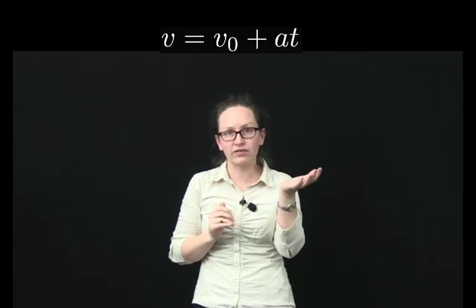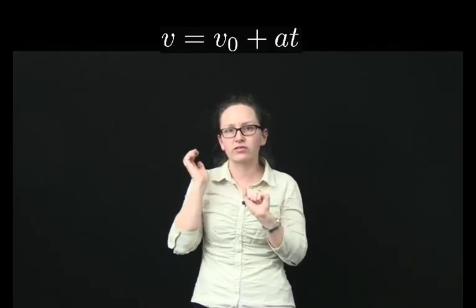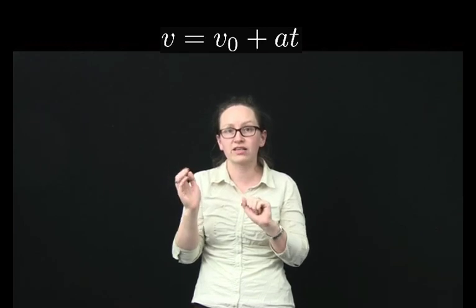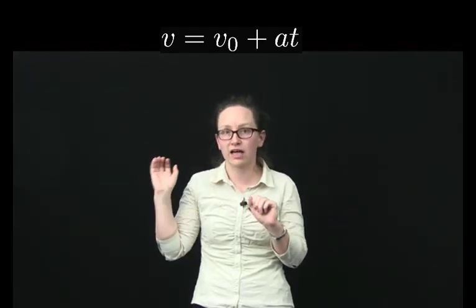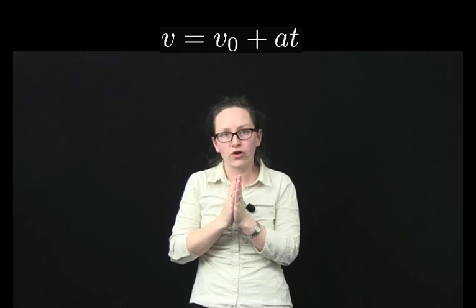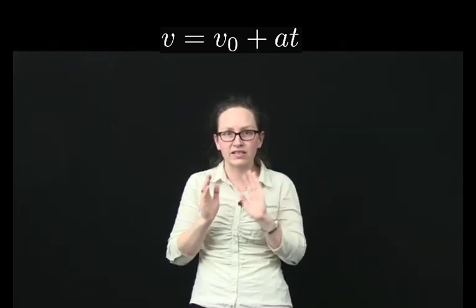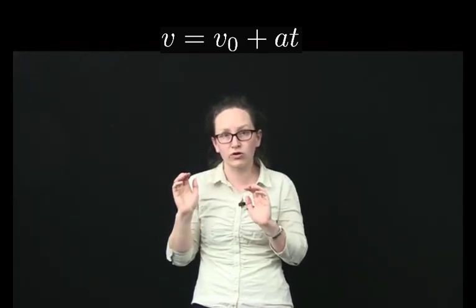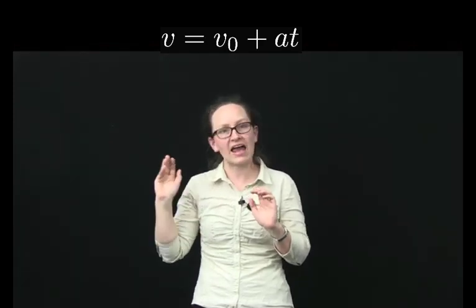The first of these kinematic equations is that the final velocity of an object is equal to the initial velocity of an object plus the acceleration times time. So we write this as v is equal to v subscript 0 plus at.